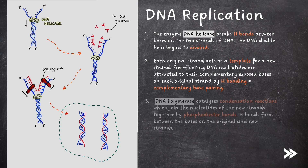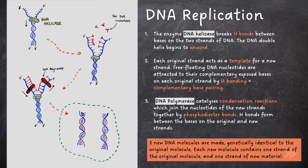Then the enzyme DNA polymerase catalyzes condensation reactions which join the nucleotides of the new strands together by phosphodiester bonds. Hydrogen bonds form between the bases on the original and the new strands. And finally, two new DNA molecules are made, genetically identical to the original molecule. Each new molecule contains one strand of the original molecule and one strand of new material.